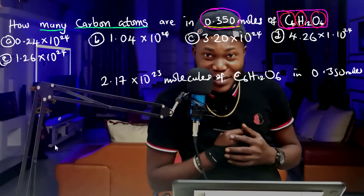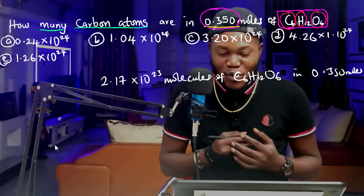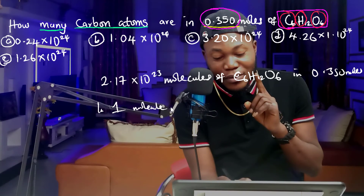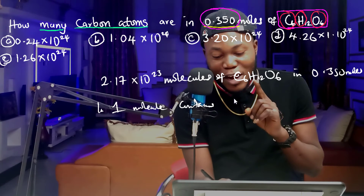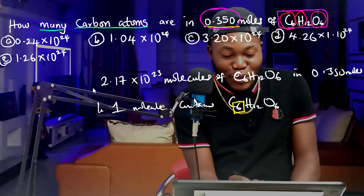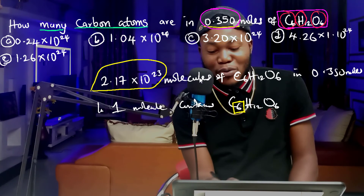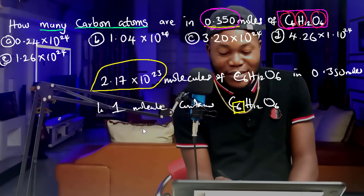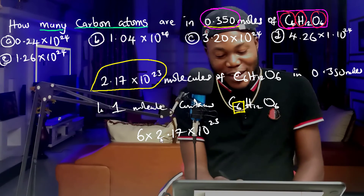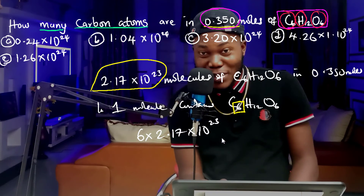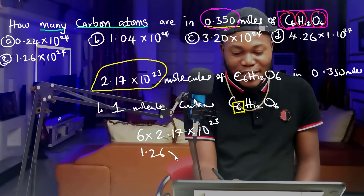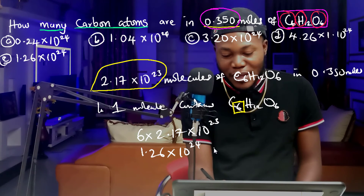Now we can get the number of carbon atoms. One molecule of glucose contains 6 carbon atoms. So 2.17 times 10 to the 23rd molecules of glucose will contain 6 times 2.17 times 10 to the 23rd carbon atoms. Working this out gives 1.26 times 10 to the 24th carbon atoms in 0.350 moles of glucose.